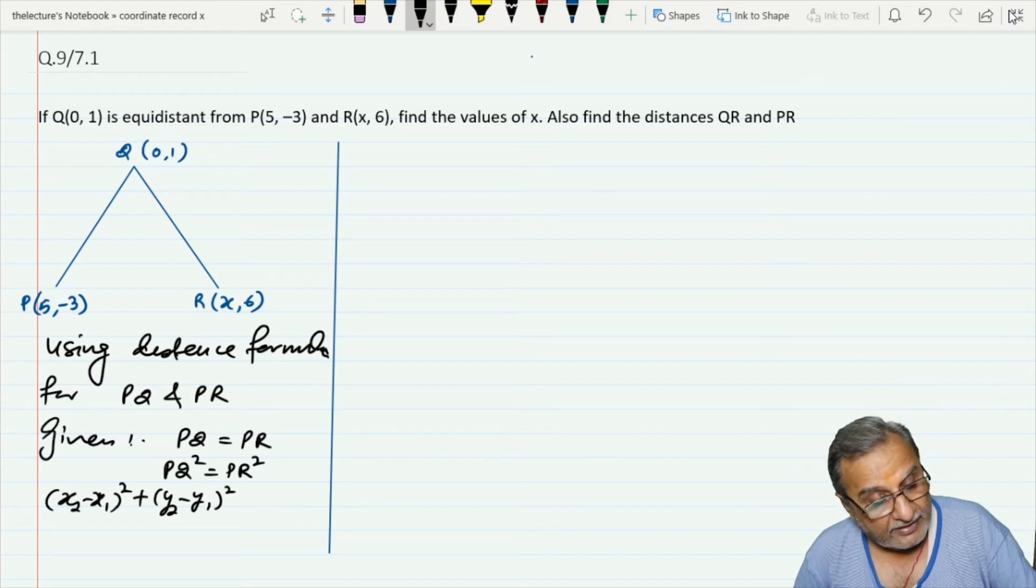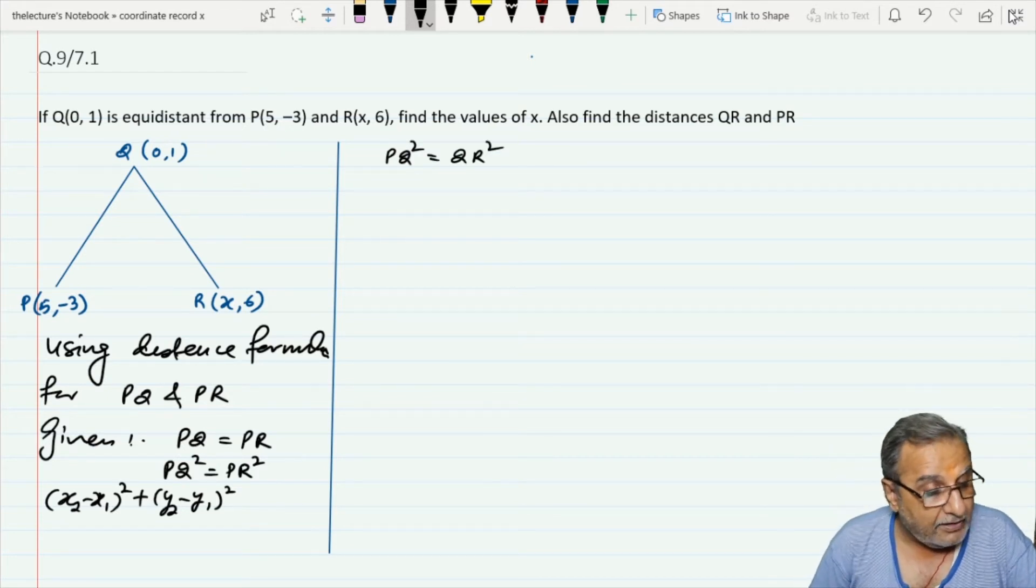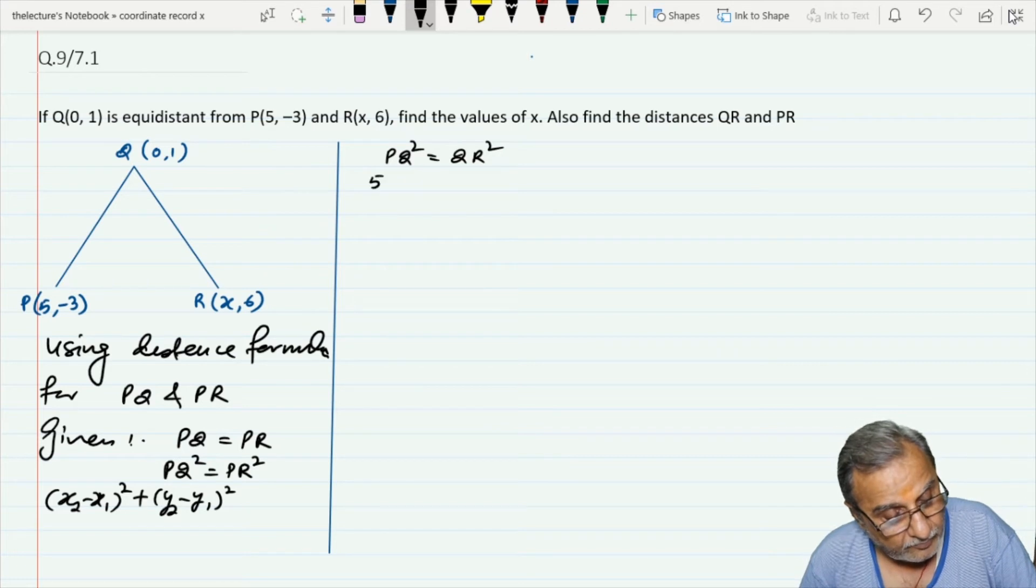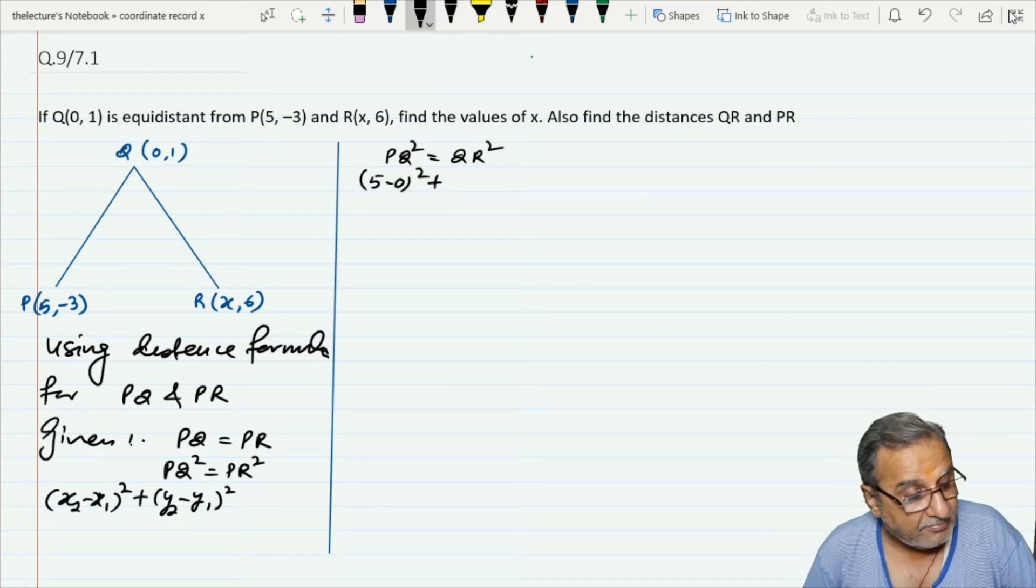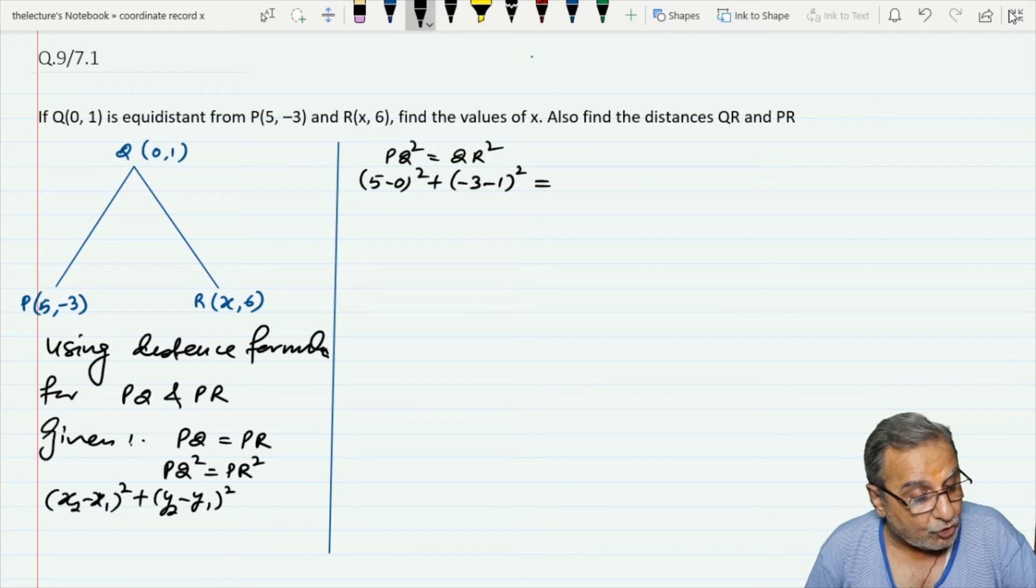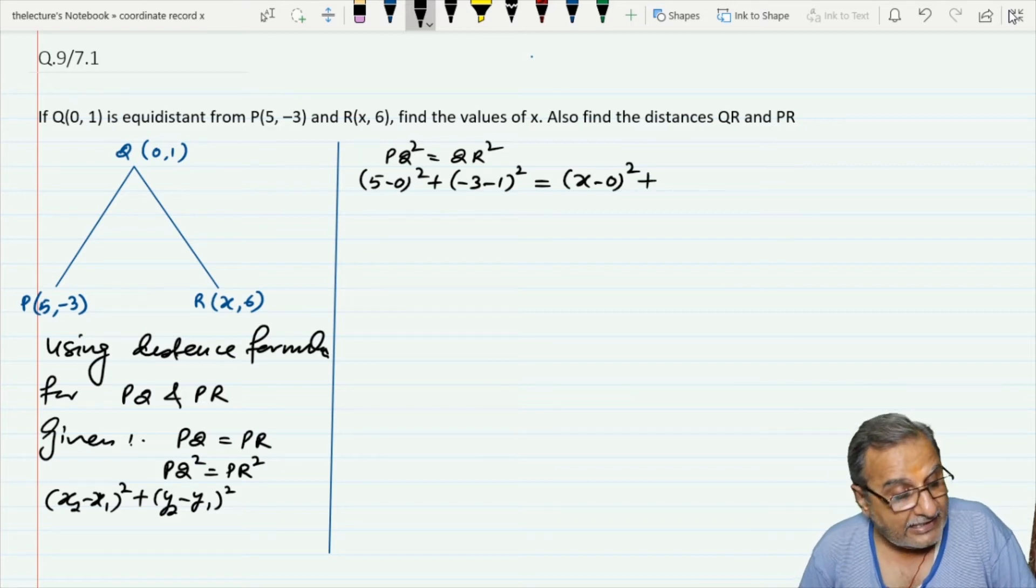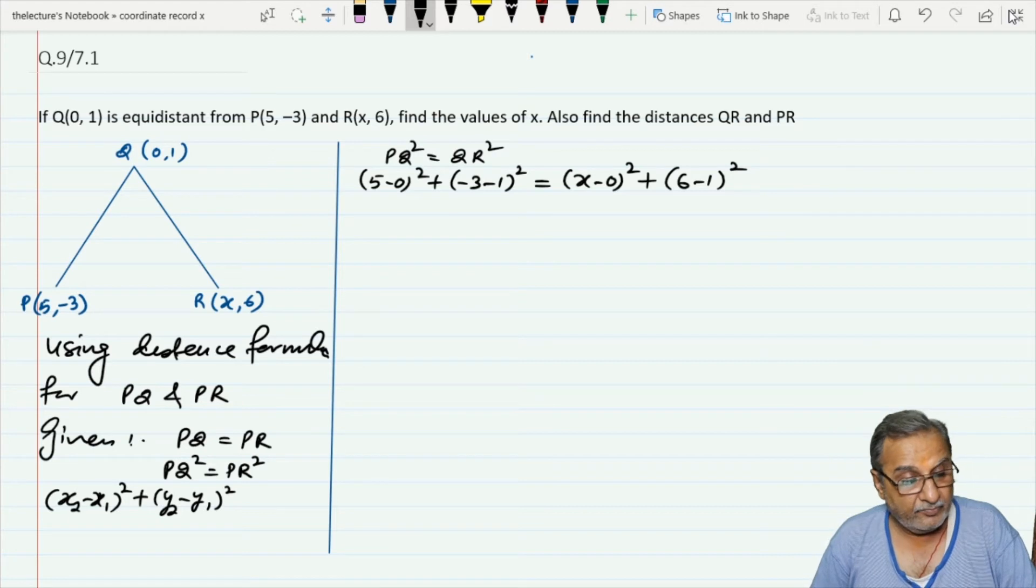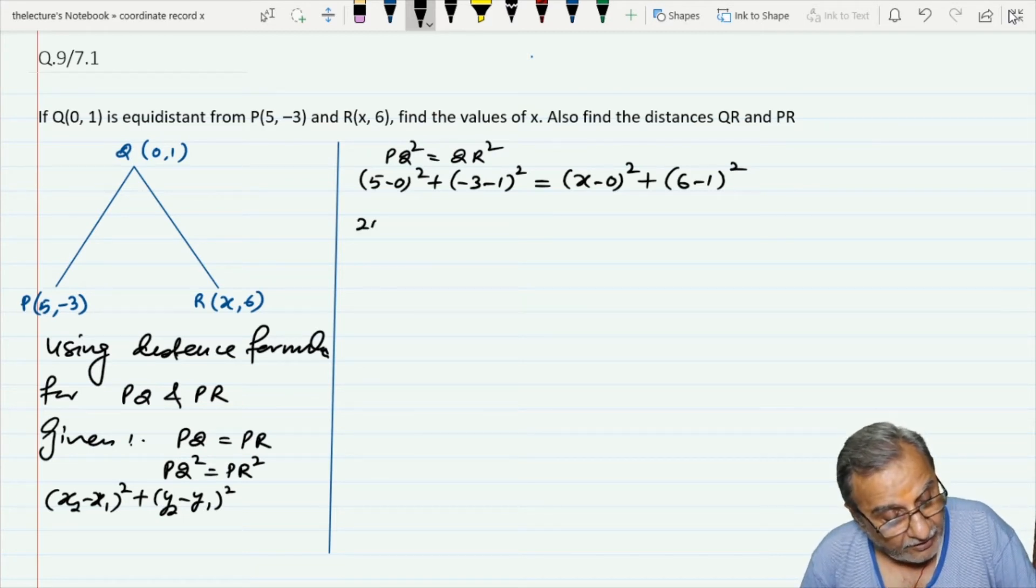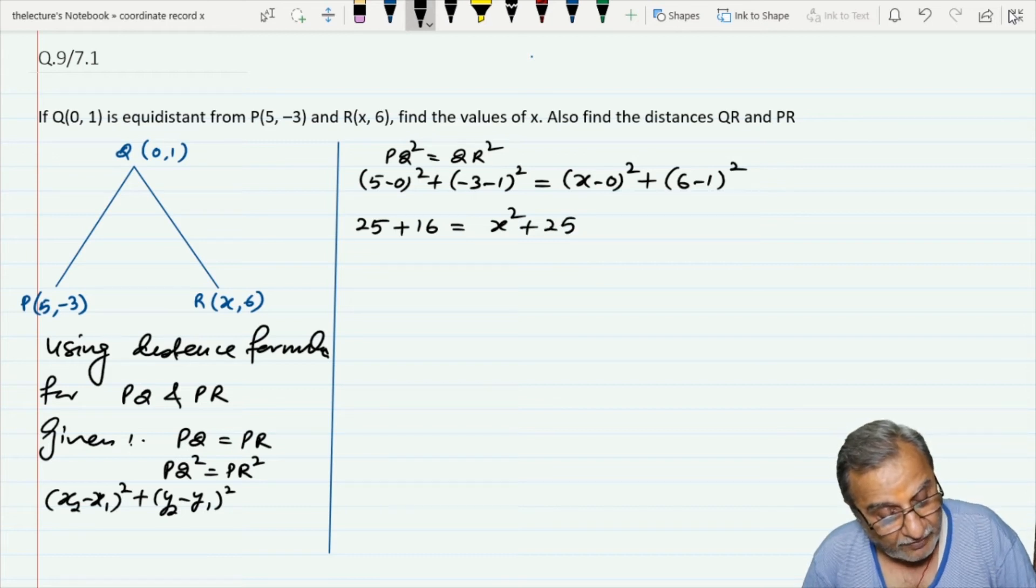For PQ², I will write (5-0)² + (-3-1)² equals (x-0)² + (6-1)² for PR. So 25 + 16 equals x² + 25, where 16 is (-4)² and 25 is 5².